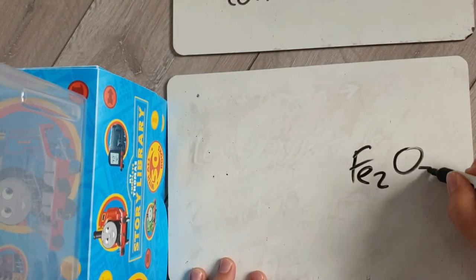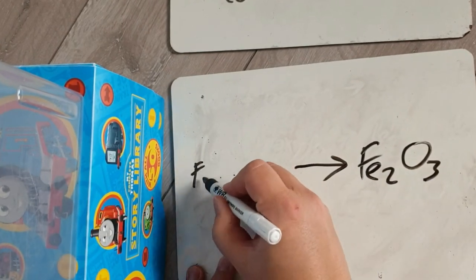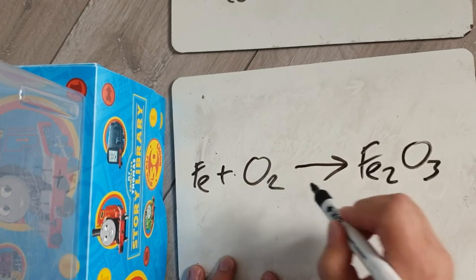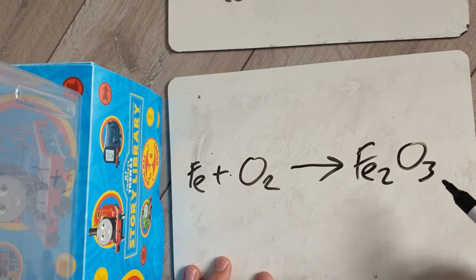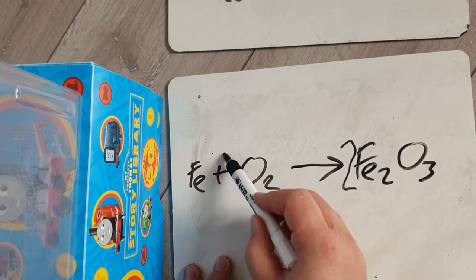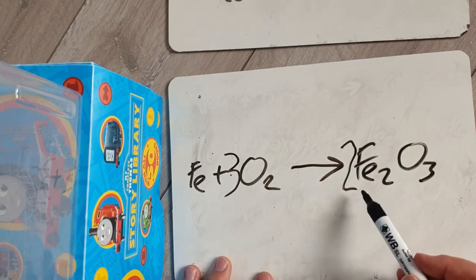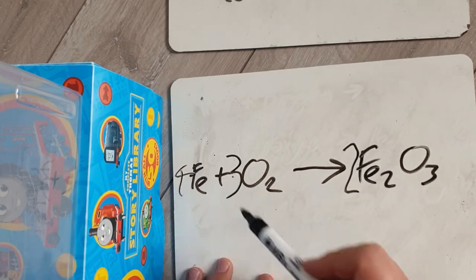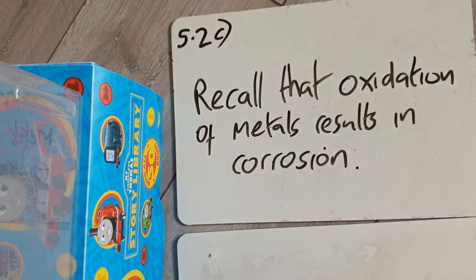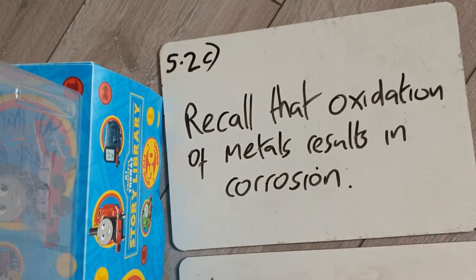If the oxidation of iron produces iron oxide Fe2O3 and you had to write a balanced equation: start with Fe and O2, then balance. A 2 in front of Fe2O3 and a 3 in front of O2 gives six oxygens on each side. Then we need 4 iron atoms on the left, so put 4 in front of Fe.